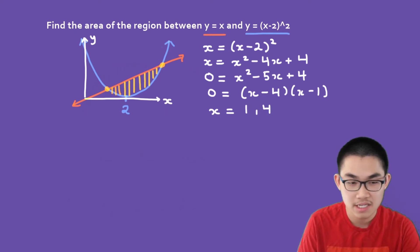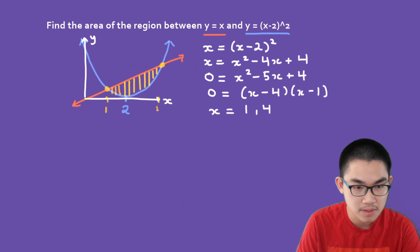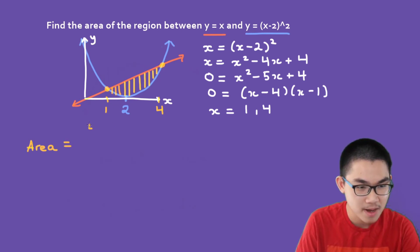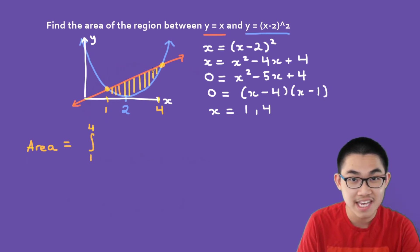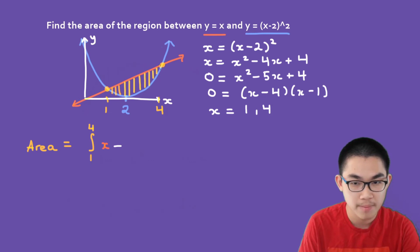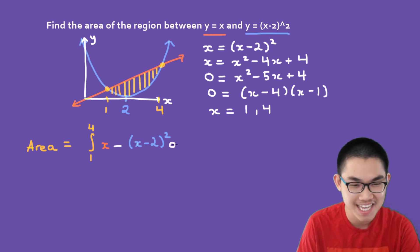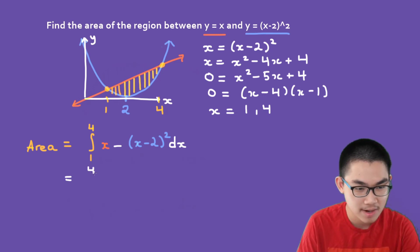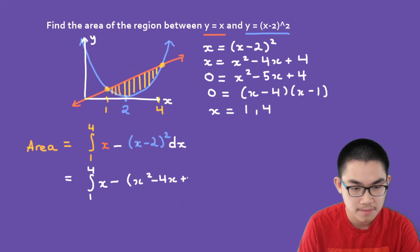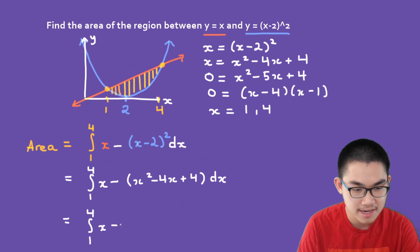The intersection points are at x equals 1 and x equals 4. Using our area formula, we integrate from 1 to 4. The upper function is the orange function (x), and we subtract the lower function, the blue parabola (x minus 2) squared, then don't forget the dx — it is super important. Simplifying: x minus (x squared minus 4x plus 4) dx, which equals x minus x squared plus 4x minus 4 dx.